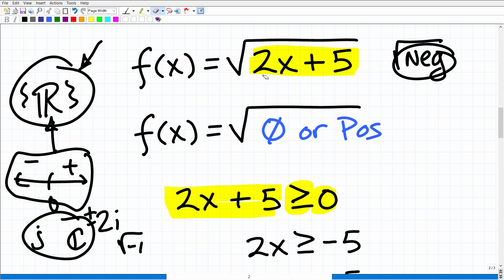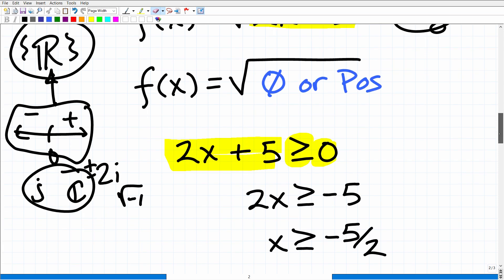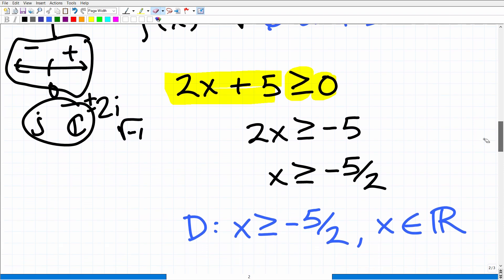Okay, so with that being said, right, we have 2x plus 5. We know that it has to be a positive number or it can be 0, so we can just construct a lovely little inequality just like this. 2x plus 5 is greater than or equal to 0.